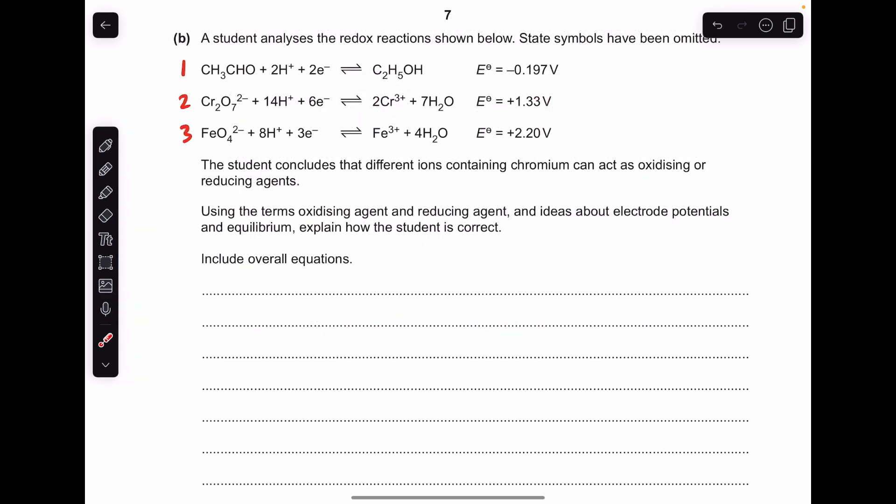Moving on to part B, you'll notice I've numbered the three reactions 1, 2, 3 and that's because I'm going to use these labels now in my answer. We'll start by explaining the oxidizing agent process. First thing we'll do is just say what an oxidizing agent is - an oxidizing agent is an electron acceptor.